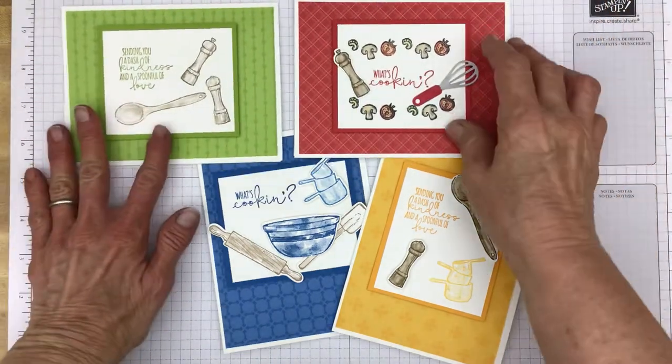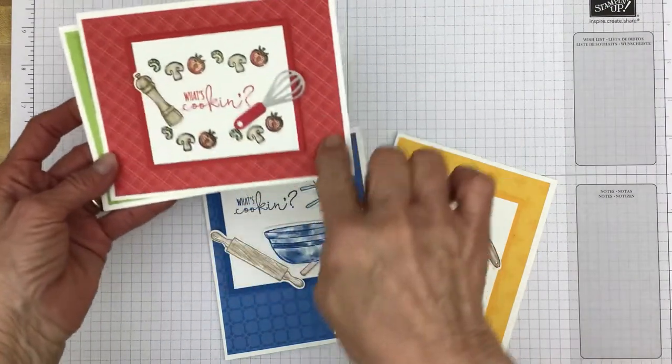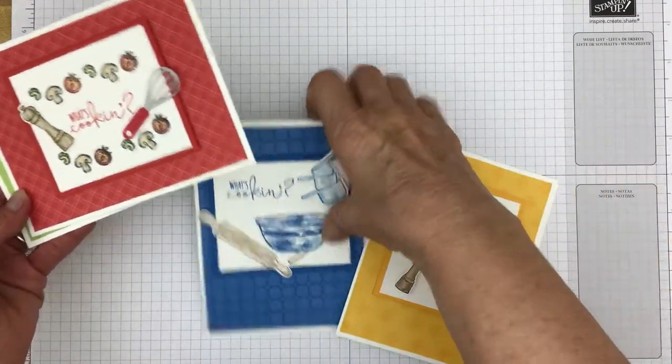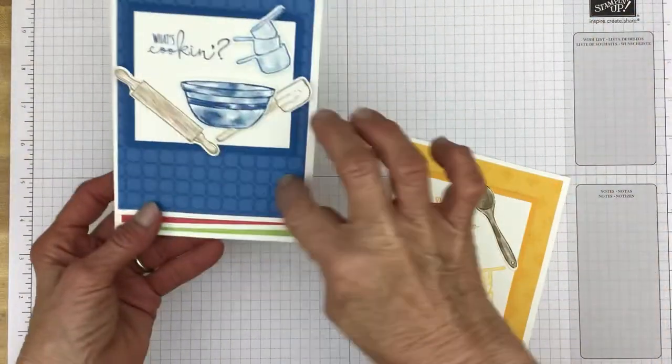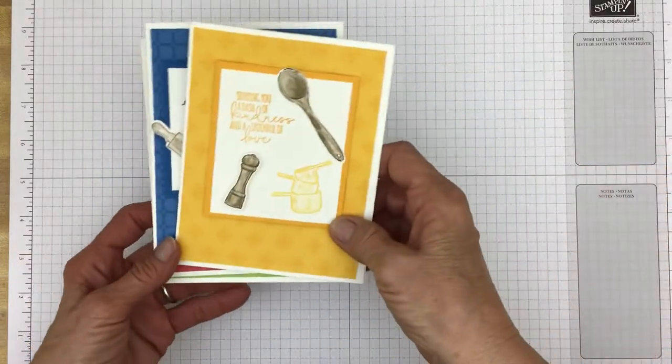I have one in a Granny Apple Green and then in the Poppy Parade, Pacific Point, and the Mango Melody.